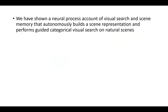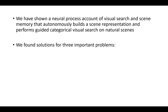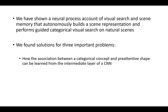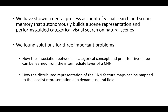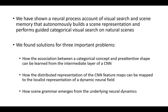We have shown a neural process account of visual search and scene memory that autonomously builds a scene representation and performs guided categorical visual search in natural scenes. We found solutions to three important problems: how the association between a categorical concept and pre-attentive shape can be learned from the intermediate layer of a CNN; how the distributed representation of CNN feature maps can be mapped to the localist representation of a dynamic neural field; and how scene grammar emerges from the underlying neurodynamics. I hope you enjoyed the talk and I'm happy to answer any questions.